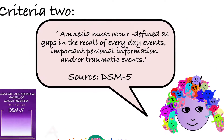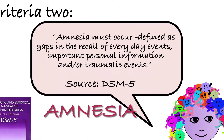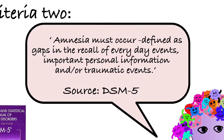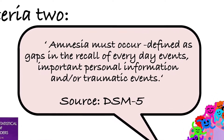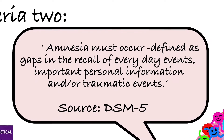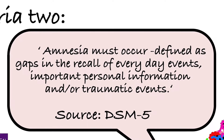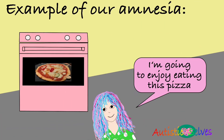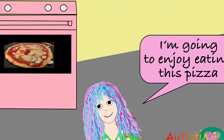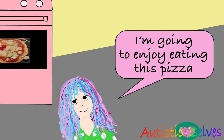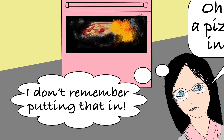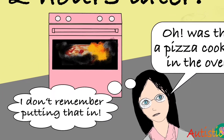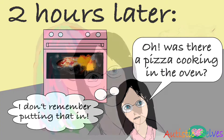The second criteria in the DSM-5 is that amnesia must occur, defined as gaps in the recall of everyday events, important personal information, and/or traumatic events. An example from our report of us having amnesia was not remembering we were cooking and forgetting to turn the oven off. This would usually be because we had switched into a different persona and the new persona had no memory of what we were doing.